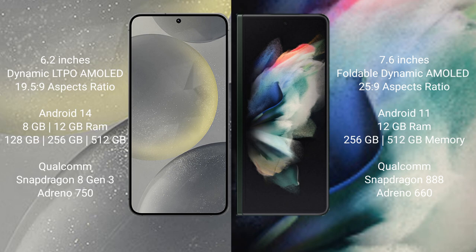Samsung Galaxy S24 comes with 8GB and 12GB RAM, and 128GB, 256GB, and 512GB internal storage. It features a Qualcomm Snapdragon 8 Gen 3 processor and GPU Adreno 750.